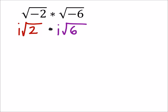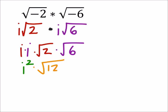All right, so rearranging these, I've got i times i times the square root of 2 times the square root of 6. So this would combine into i squared times the square root of 2 times 6 is 12.